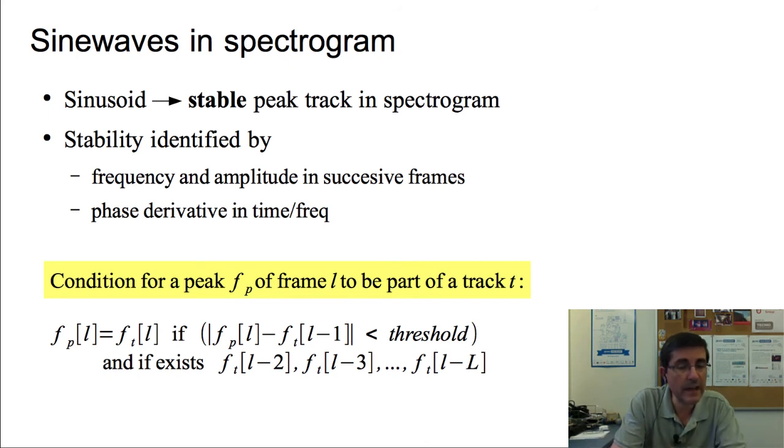The condition for a peak of a frame to be part of a track is defined by this equation. A peak, a particular frequency of a peak f sub p of a given frame L, will be part of a track if the distance between that frequency and the frequency of the previous frame, so the track is coming from the previous frame, if the absolute value of this difference is smaller than threshold. And also, if it exists a track for a certain amount of time. So we will make a constraint in terms of the frequency, that it doesn't change that much, and at the same time we will make a constraint in terms of how long has this track been in existence. If it's too short, it means it's like a short burst and that's not really a sinusoid.